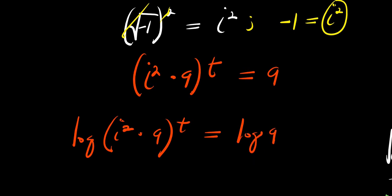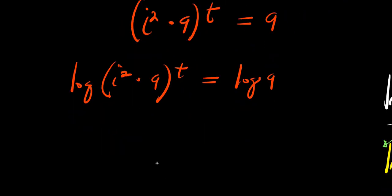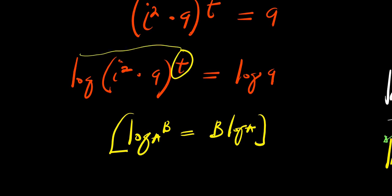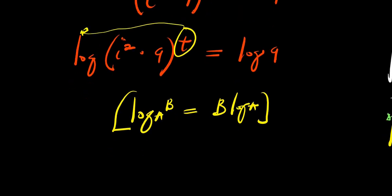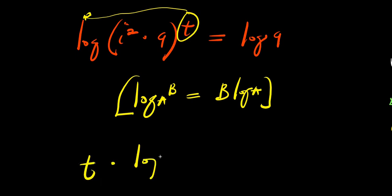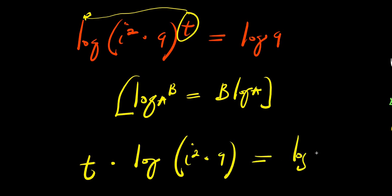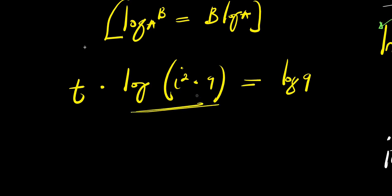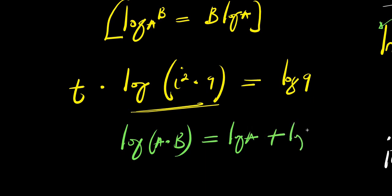We are going to apply the logarithm property: log of A to the power of B equals B times log A. So the exponent t comes in front of the log, giving t times log of i squared times 9, and this equals log 9. Now this is in the form of log(A times B), which equals log A plus log B.